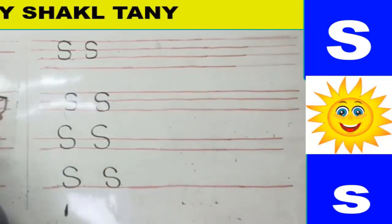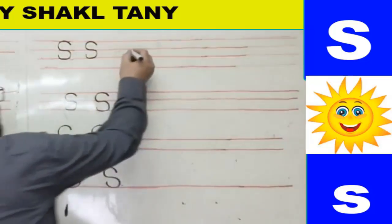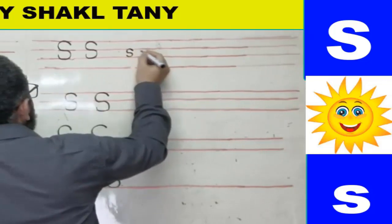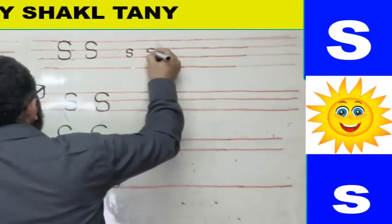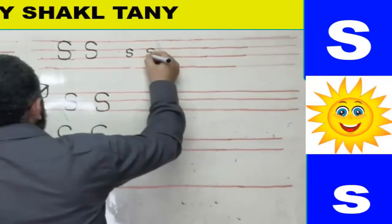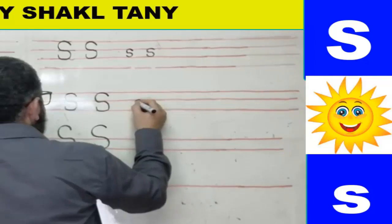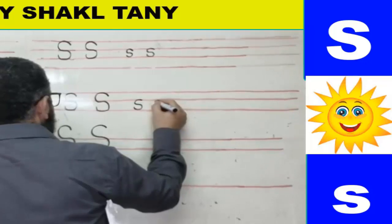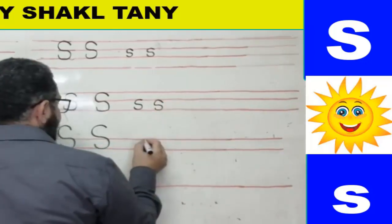The small s has exactly the same shape as the capital S, but it sits between the two lines. Starting from line two, it stays between the two lines — between the second and third lines — the same curved shape, just smaller between those two lines.